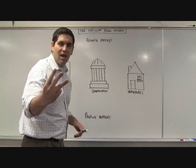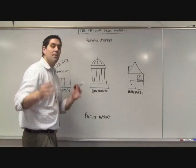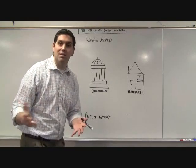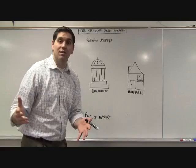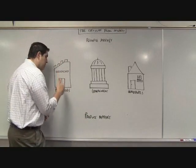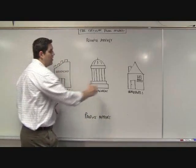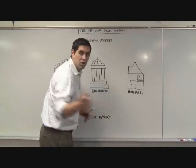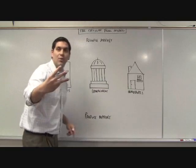In a free market system, there are only three entities in the economy: businesses, individuals — you and me — and the government. That's it. Three entities.